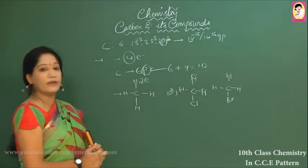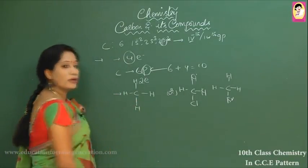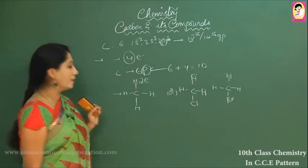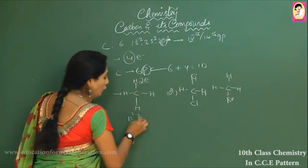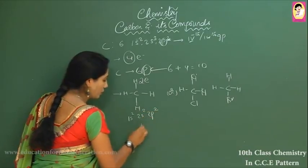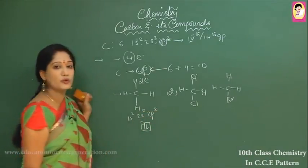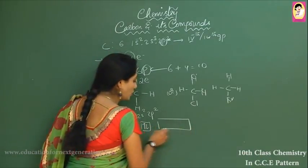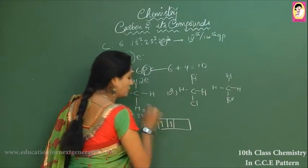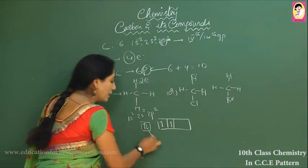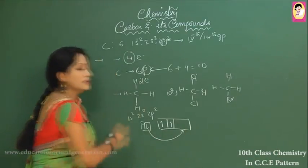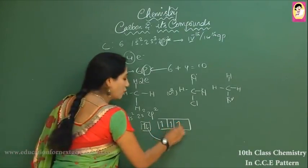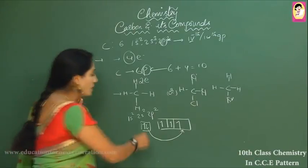Let us see the electronic configuration of carbon. The configuration is 1s² 2s² 2p². Looking at the orbital diagram for the valence shell: two electrons in the s orbital and two electrons in the p orbital, one each. When energy is supplied, one electron is promoted to the next p orbital energy level, forming four unpaired electrons.